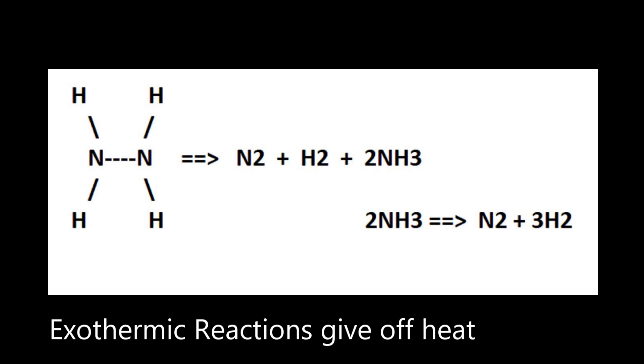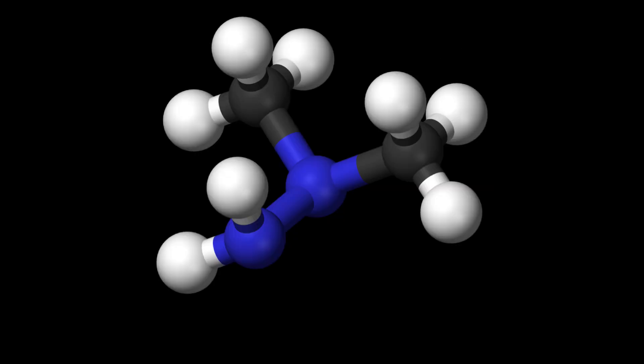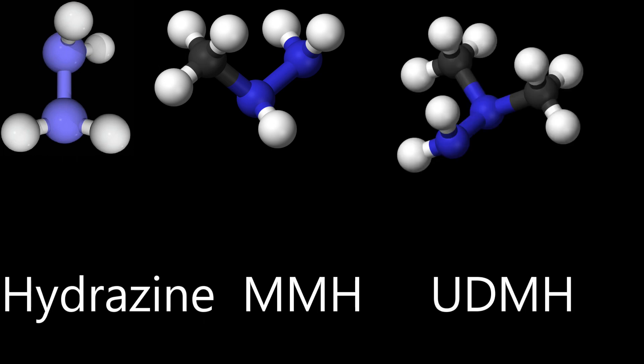If we replace one hydrogen with a methyl group we get a more stable liquid we call monomethyl hydrazine or MMH. This is what SpaceX uses in the Draco and Super Draco engines. If we replace two of the hydrogens with methyl groups we have more reactants to combust and an even more stable liquid called UDMH or unsymmetric dimethyl hydrazine. These chemicals—hydrazine, monomethyl hydrazine, and unsymmetric dimethyl hydrazine—are often mixed together and given other names.